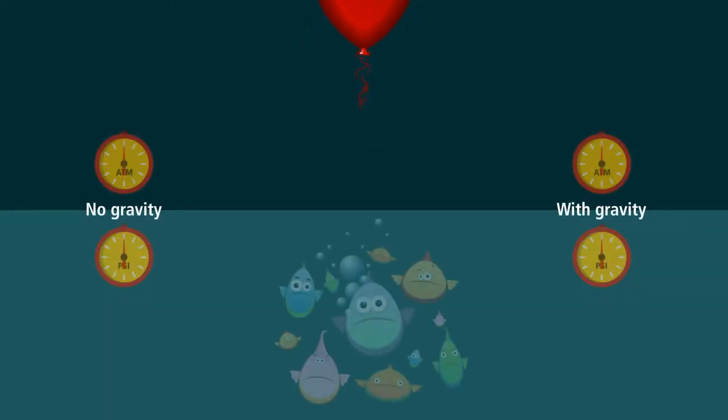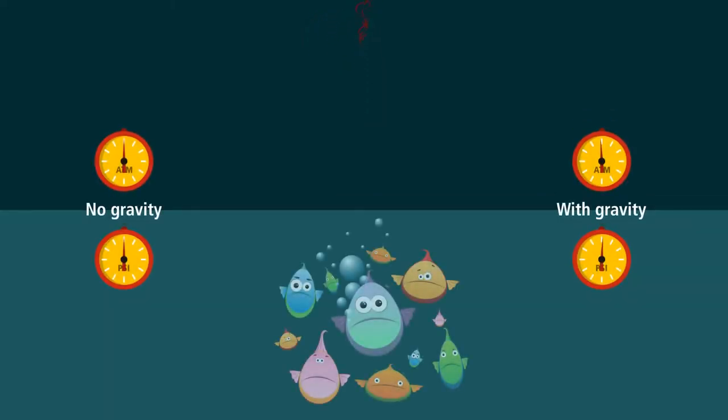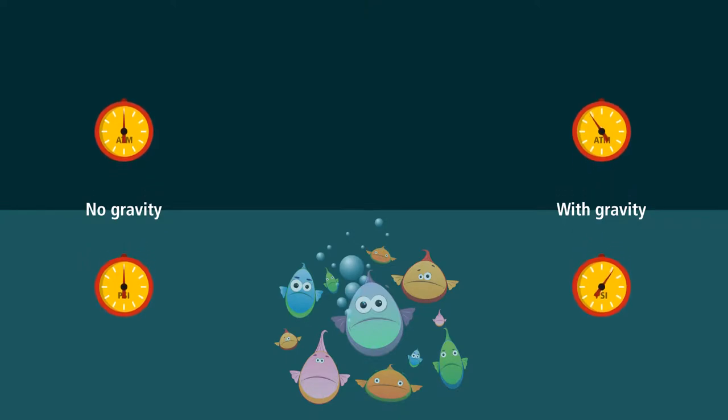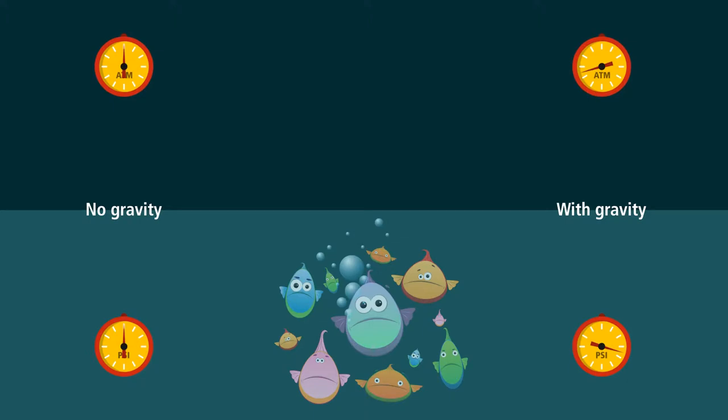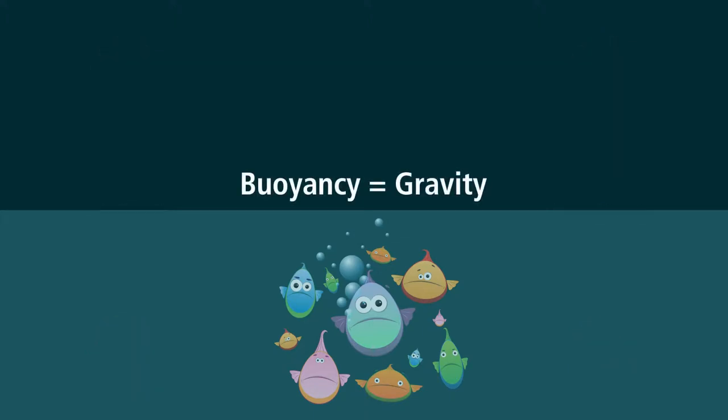In a world without gravity there would be no higher pressure deep down in the ocean, and air pressure would be exactly the same all the way up through the atmosphere. The simple fact that air pressure decreases with altitude proves gravity, and that buoyancy is an effect of gravity.